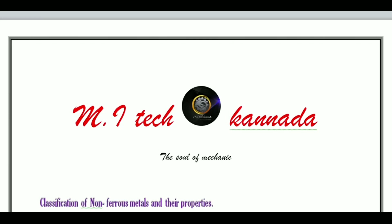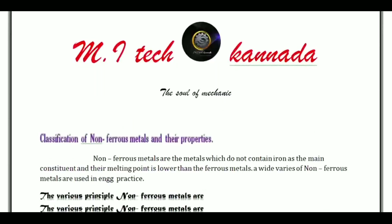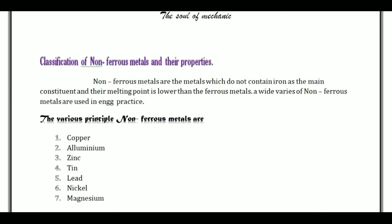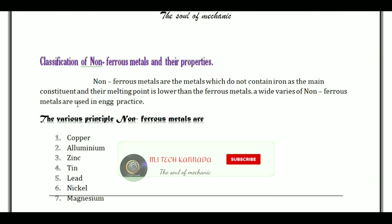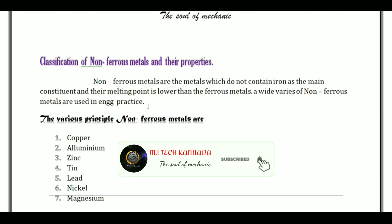This is the classification of ferrous metals and their properties. Non-ferrous metals are the metals which do not contain iron as the main constituent and their melting point is lower than the ferrous metals. A wide variety of non-ferrous metals are used in engineering practice.